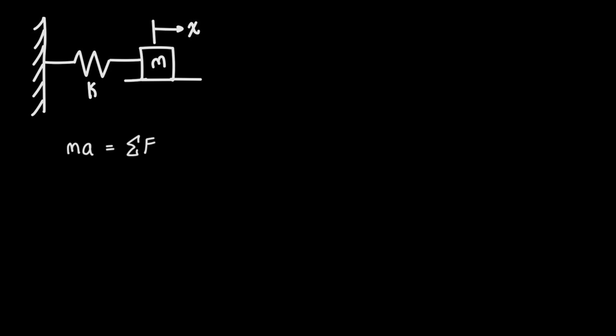Let's start with a picture. We've got an object sitting on a flat surface which has a mass of m. It's attached to a spring which has a spring constant of k, and the spring is attached to a wall. If we do a free body diagram of the mass and use Newton's second law, we'll have that the sum of the forces equals mass times acceleration. The only force we have is the spring force, which is going to be negative k times x.